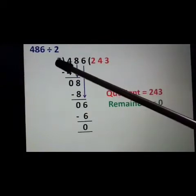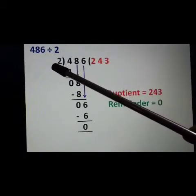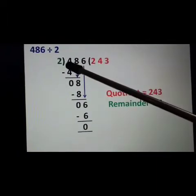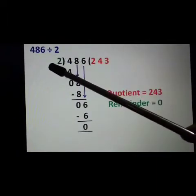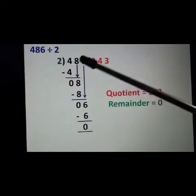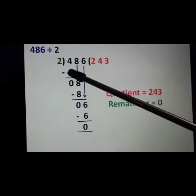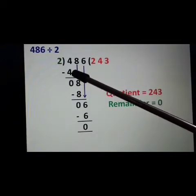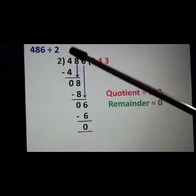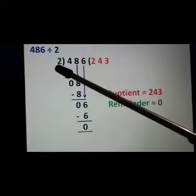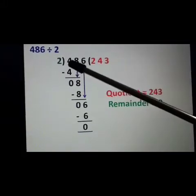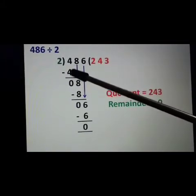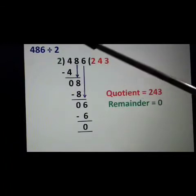We will say the table of 2. We will take the first digit. 2 twos are 4, which is equal to 4. Now we will subtract 4 minus 4 equals 0.